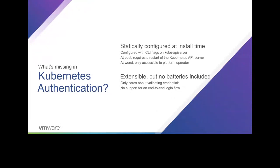There are really two gaps in the Kubernetes authentication user experience that we set out to solve with Pinniped. The first is that even though Kubernetes auth is very extensible with lots of options, they're mostly all configured with CLI flags on the Kubernetes API server — meaning at best you'll have to restart the API server to change them, and at worst you won't have access to those flags because they're managed by your cloud provider. The other gap is that Kubernetes doesn't come with any opinionated login flow — it doesn't provide an end-to-end way to take an external identity provider and let users log in. Pinniped extends existing Kubernetes options to have a dynamically reconfigurable, end-to-end, out-of-the-box login flow — the batteries included for your Kubernetes auth experience.